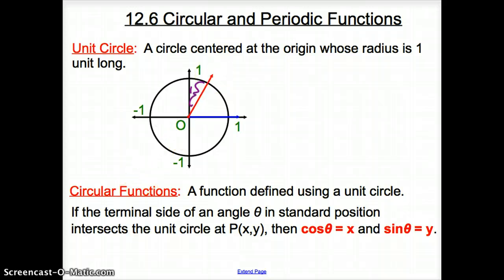Next we have circular functions. This is a function defined by using the unit circle. If we have the terminal side of an angle theta in standard position intersects the unit circle at point x, y, then we have some trig functions. We have cosine theta is the x, so whatever this x value is, that is the same as cosine. And then sine theta equals your y, so whatever this y is.